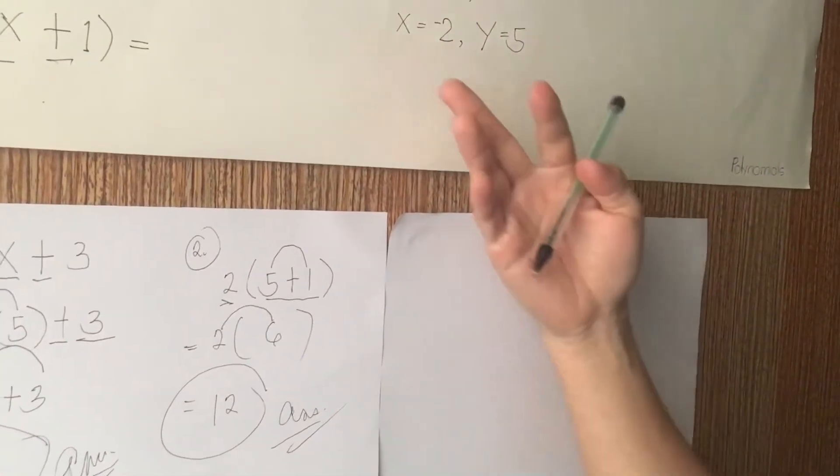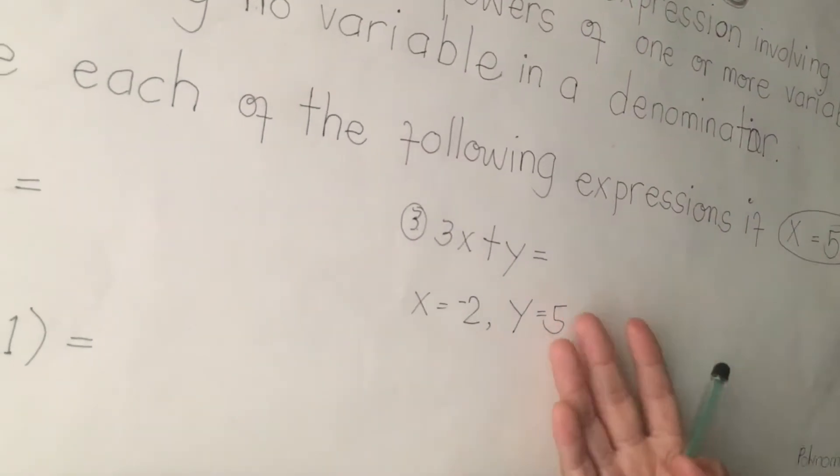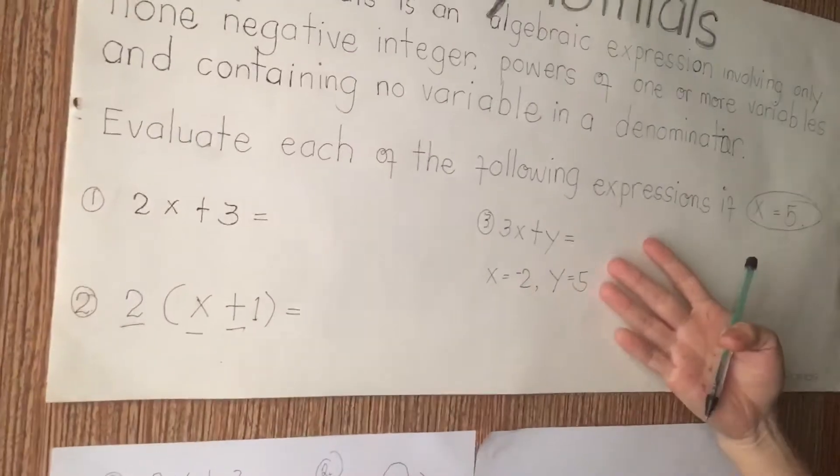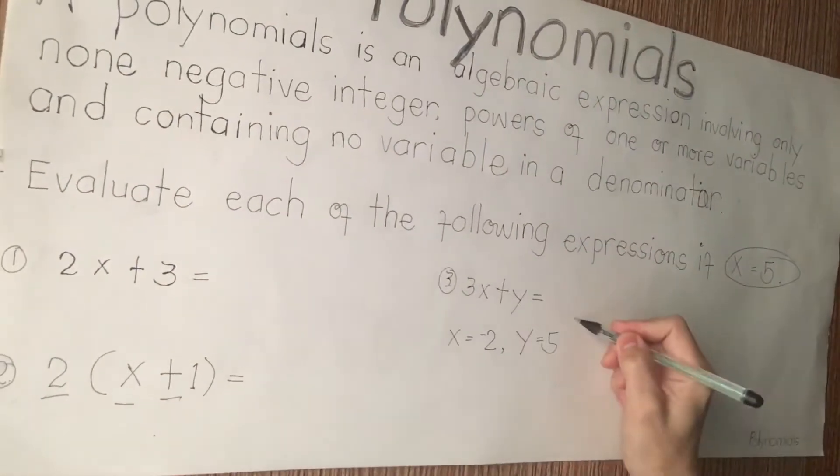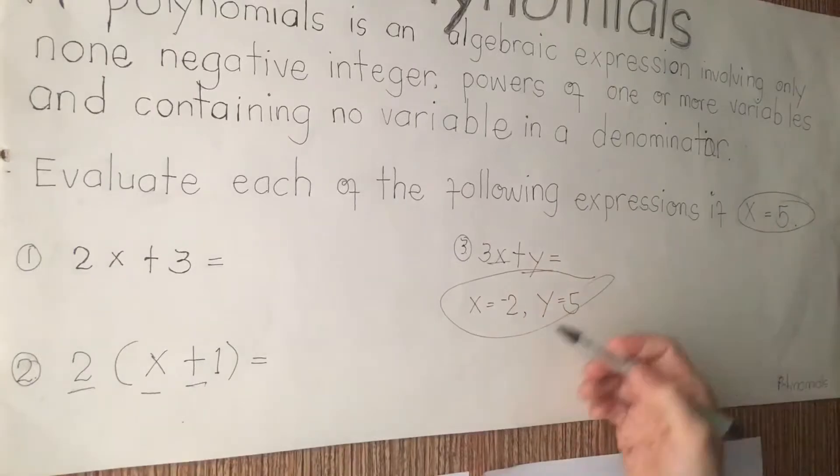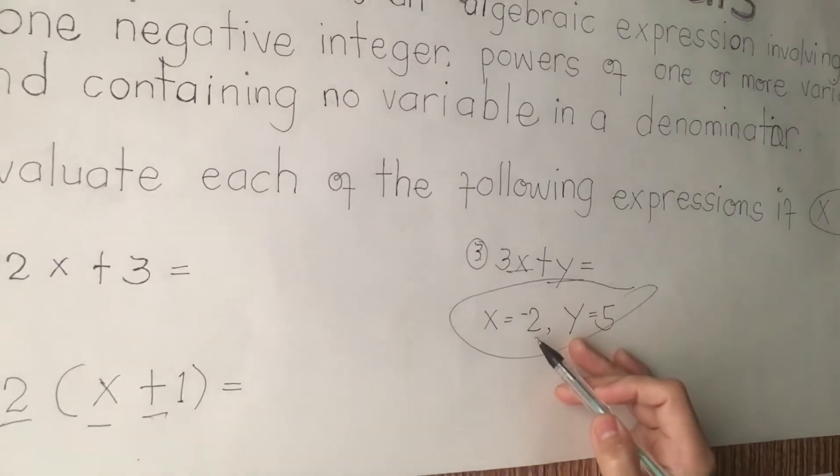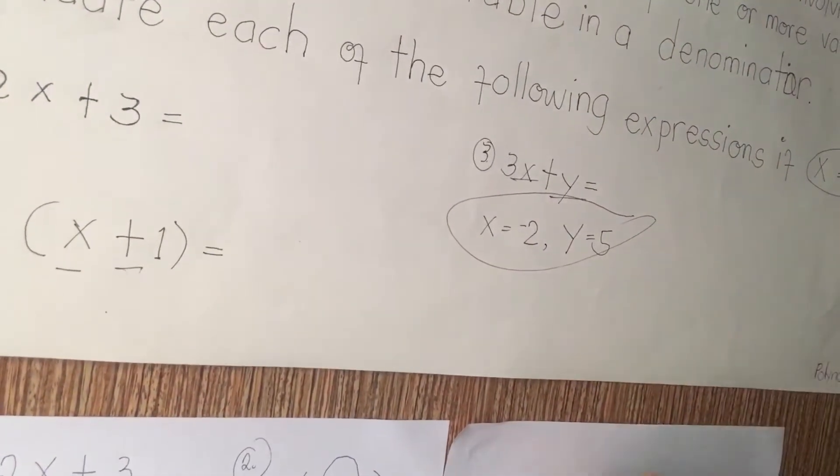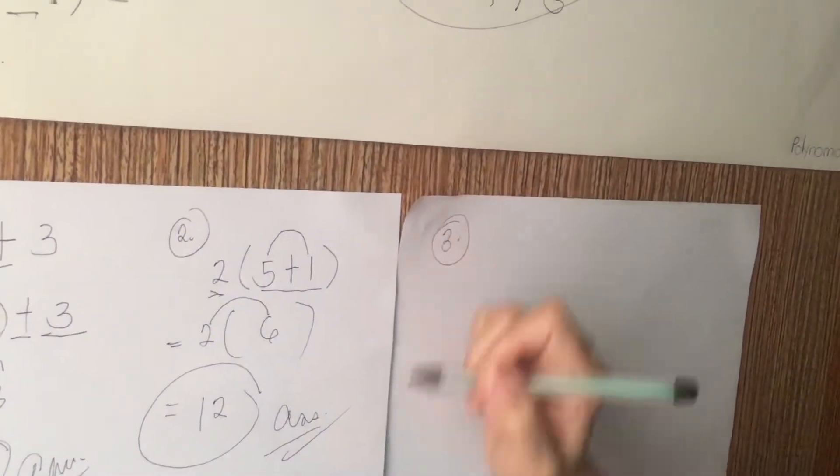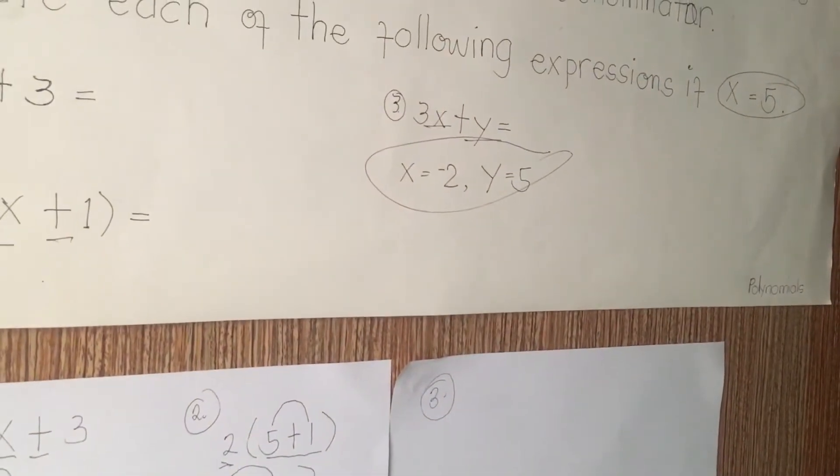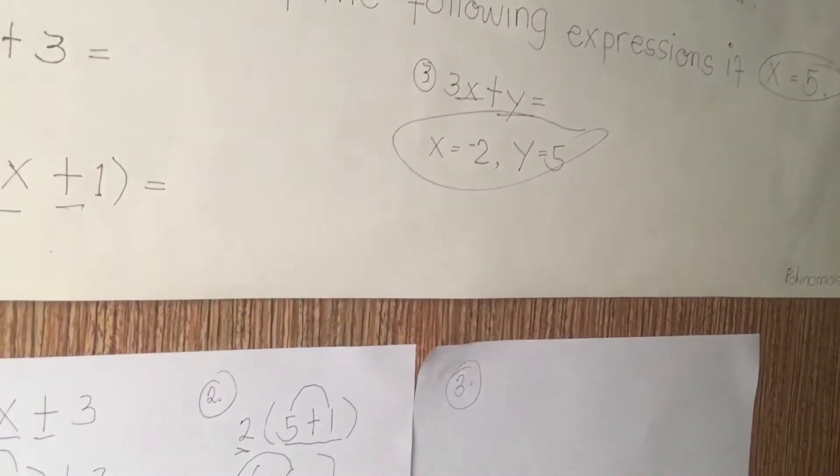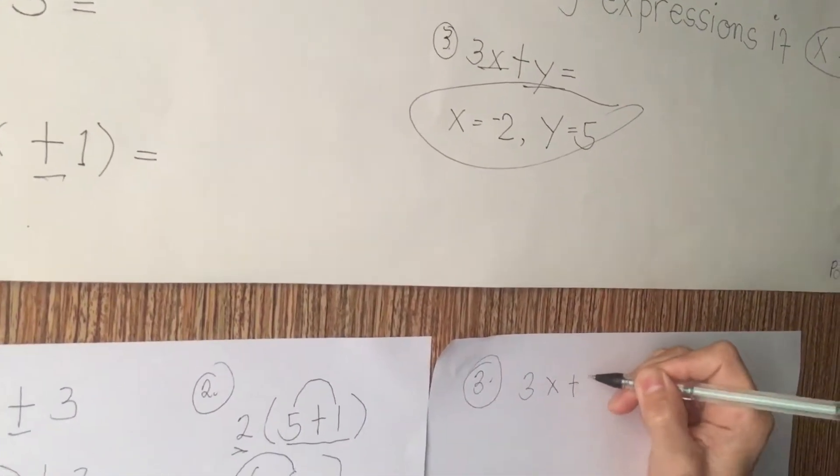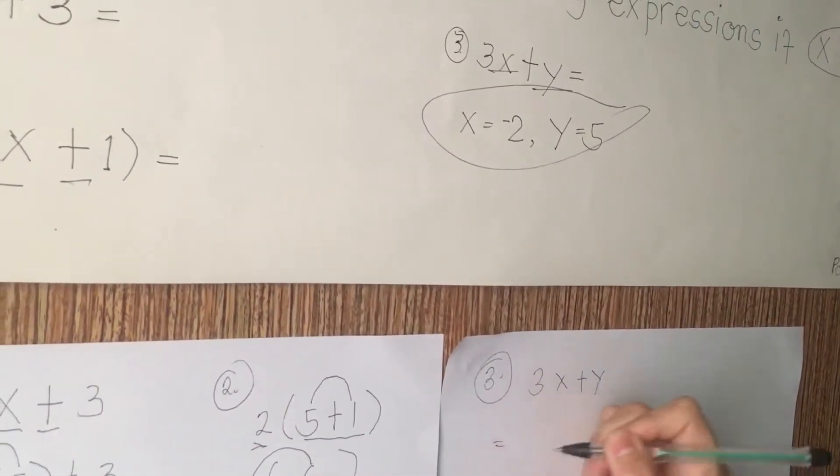Next. We have 3x plus y. This is very interesting about how to solve algebraic expressions. So, our value for x and y. We have x equals negative 2, y equals 5. We are going to solve it. Number 3. Please follow it. It should be step by step. I'm going to write 3x plus y. Put an equal sign. So, I have to write 3 here.